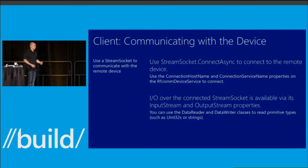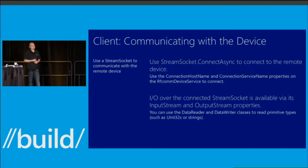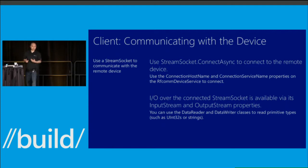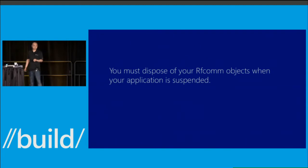Now that we've declared capabilities, enumerated the device, and the user has consented, the next steps are to connect and communicate. You connect using the existing Windows.Networking.Sockets API with ConnectAsync using the host name and service name properties we provide. Then you talk to the device using existing storage streams. To write a well-behaved application, you must clean up your RFCom socket objects when your application is suspended — if you don't, on resume attempting to access those objects will throw an exception.